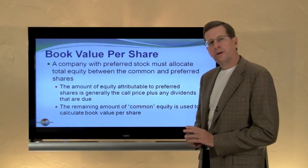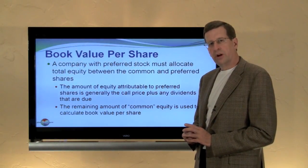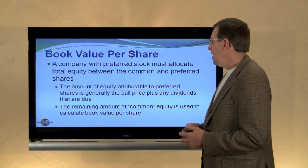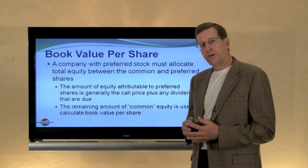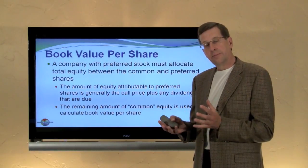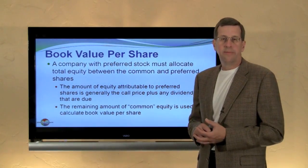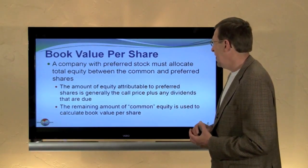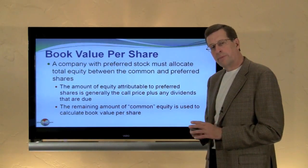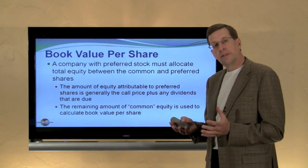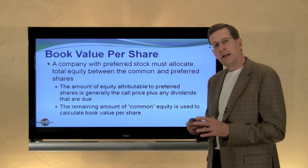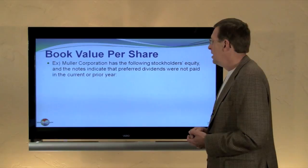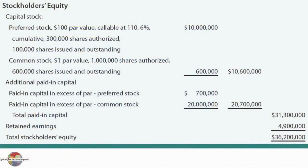When we introduce preferred stock into the calculation of book value per share, we get a more complex scenario. We need to determine how much of the total stockholders' equity is available to the preferred shares and how much residual amount remains for common equity. The amount attributable to preferred stock is generally the call price of the preferred stock plus any amounts due for current and prior period dividends.